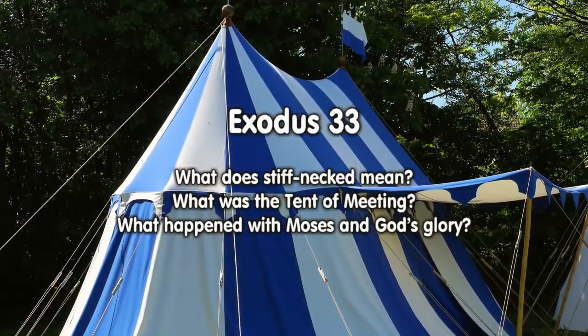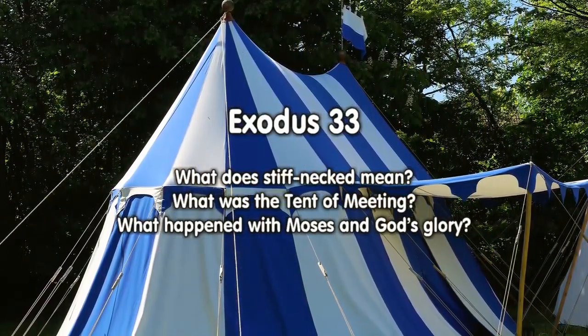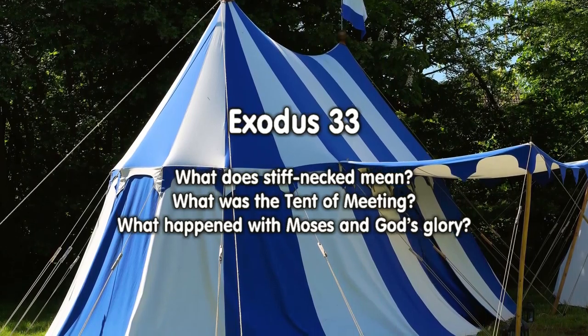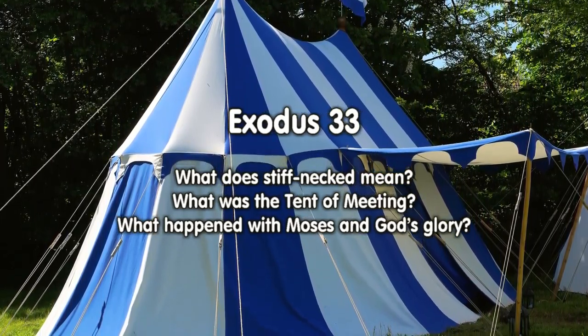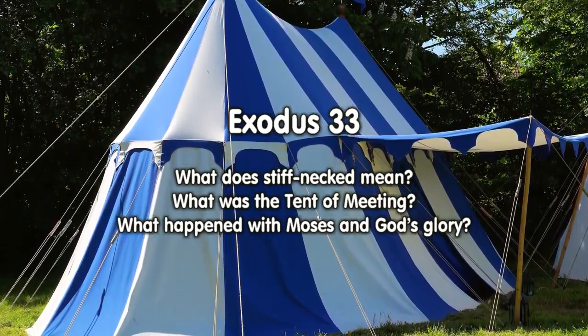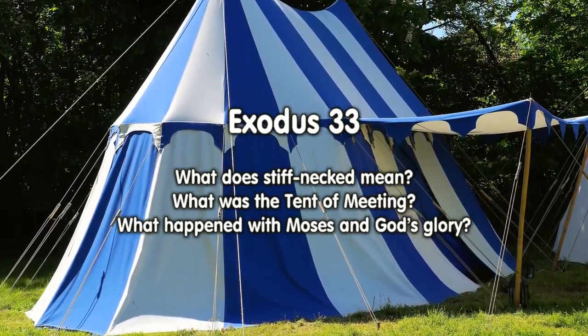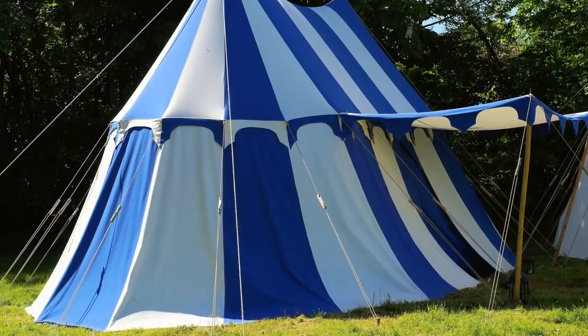In Exodus 33, what does 'stiff-necked' mean? What was the tent of meeting? What happened with Moses in God's glory?